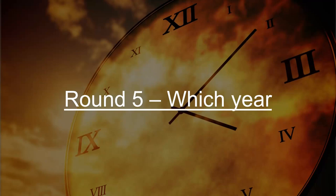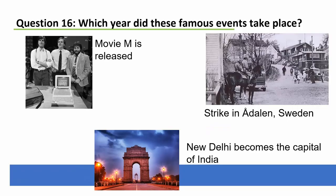Moving on to round five — which year? We take images from a specific year and you have to guess which year it is. The events shown: movie M is released, there's a strike in Årdalen in Sweden, and New Delhi became the capital of India. Which year did these things happen? The answer is 1931.